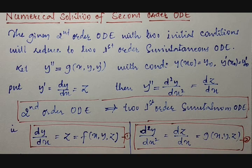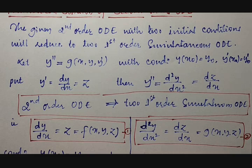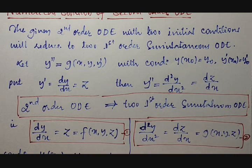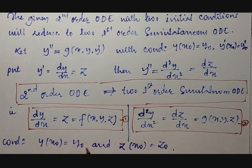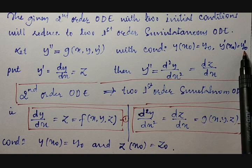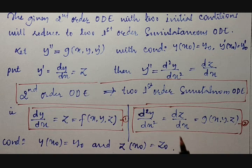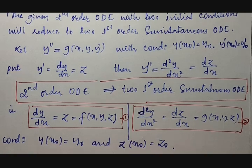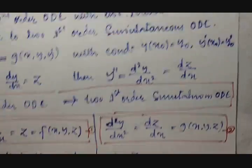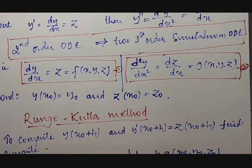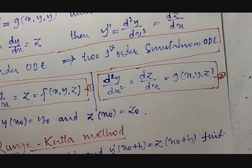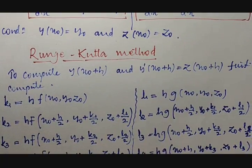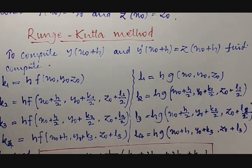The initial conditions are updated as follows: y(x₀) = y₀ remains the same, and the second condition y'(x₀) = y₀' becomes z(x₀) = z₀, since y' is now substituted as z. These are the new conditions taken for consideration. Now we will discuss the RK method for this second order differential equation, which was already discussed in previous classes for first order.